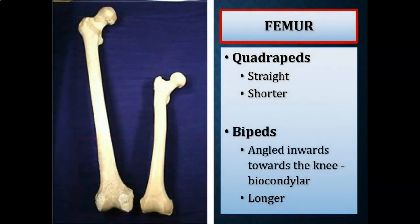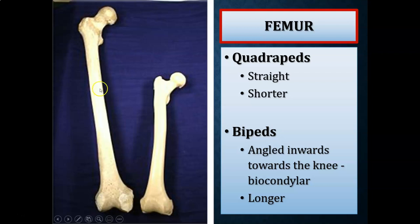The next feature is the femur. If the femur is longer and angled inward towards the knee, it's much more likely that you're looking at a biped. If the femur is shorter and straighter, then you're much more likely looking at a quadruped. Another feature we're going to look at is called the linea aspera — a ridge on the posterior, the back end of the femur — which is present in bipeds and not present in quadrupeds.